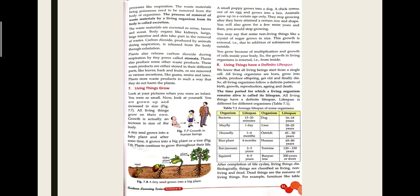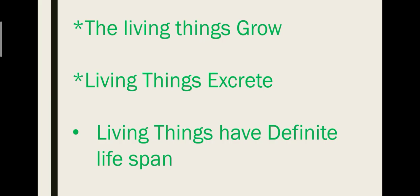After completion of the life cycle, living things die. We all know that once the life cycle is complete, the last stage is death. Biologically, things are classified as living, non-living, and dead. Dead things are the remains of once-living things — for example, furniture like a table. The characteristics we have discussed include: living things grow, living things excrete, and living things have a definite life span.